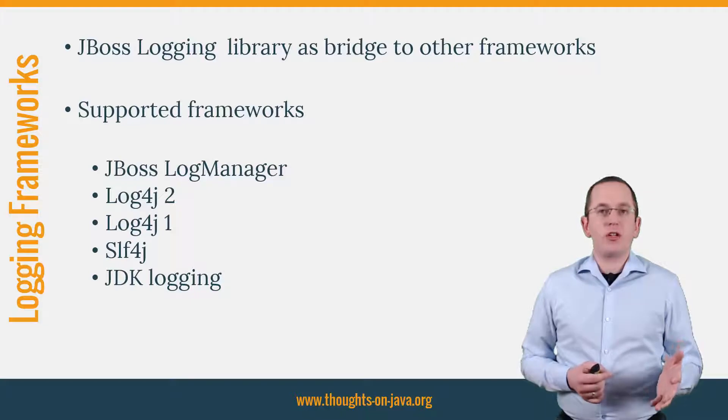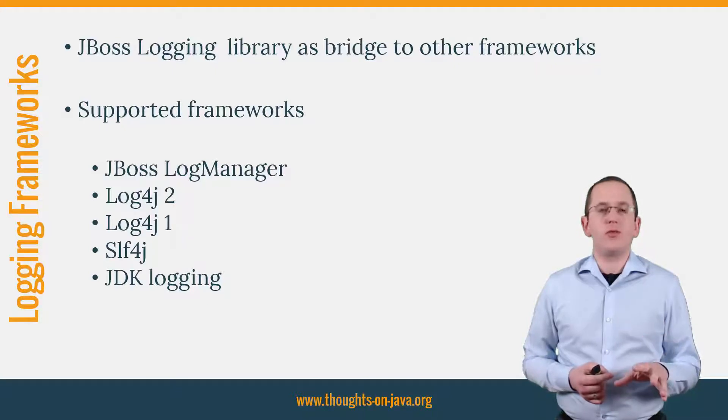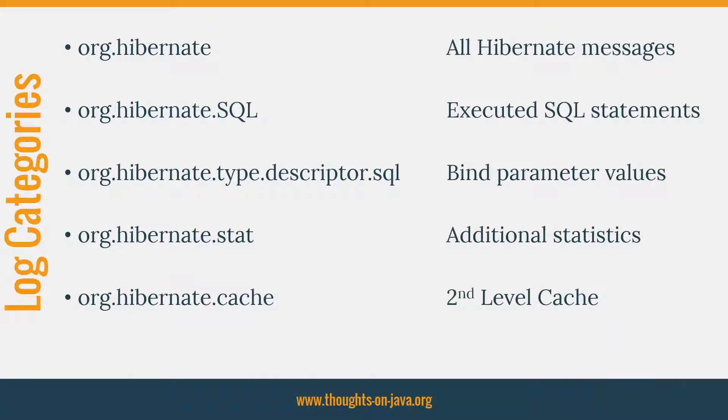The concepts and log categories are the same for all frameworks, but the names of the log levels might be different if you use a different framework. As with all applications and frameworks, Hibernate writes log messages in various categories and log levels. The categories group log messages for specific topics like executed SQL statements or cache interactions. You can see some of the most important log categories here on the slide. The names of the log levels are defined by your logging framework and define the amount and granularity of the log messages. You can assign a log level to each category. If you do not define a log level for a specific category, it will inherit the level from its parent category.